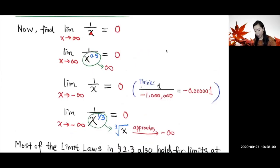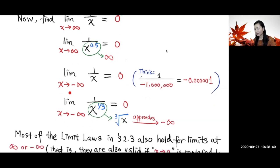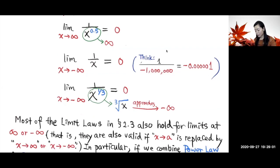First, let's find the limit of 1/x as x goes to infinity. When x goes to positive infinity, 1/x goes to zero. Similarly, 1 over x^0.5 — which is x to the one-half power — also goes to zero as x goes to positive infinity, because you're dividing by a quantity going to positive infinity. When x goes to negative infinity, 1/x also goes to zero, since the denominator becomes larger and larger in the negative direction, making the quotient approach zero from the negative side.